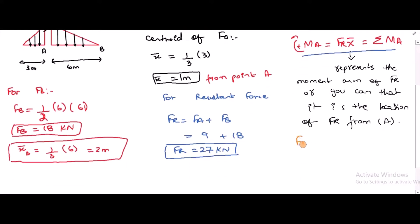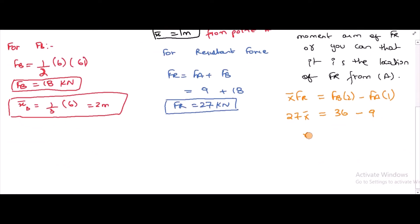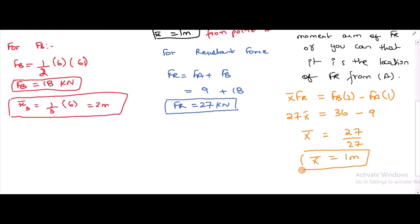So we have: 27 × x̄ = 18 × 2 − 9 × 1 = 36 − 9 = 27. Therefore x̄ = 27/27 = 1 meter. The position of the resultant force is 1 meter from point A.